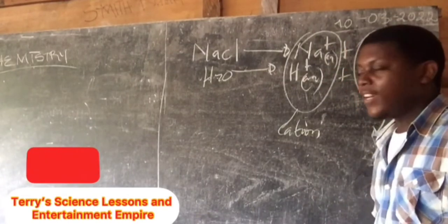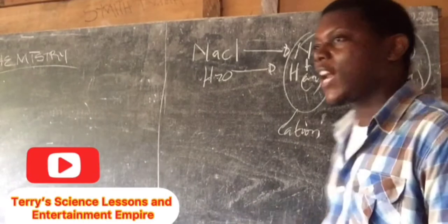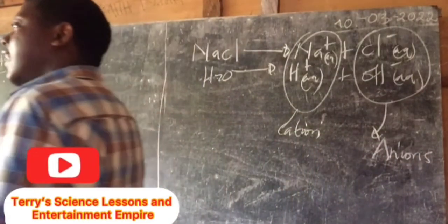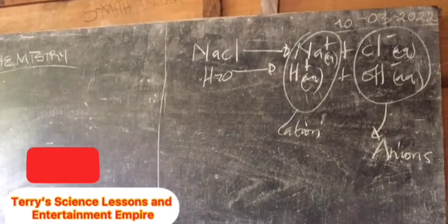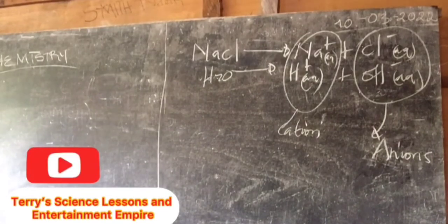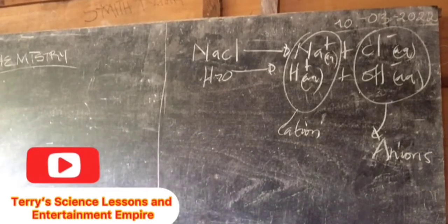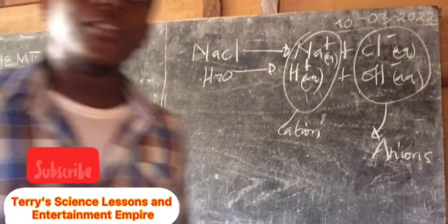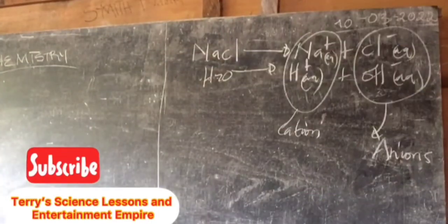Where are the cations? They will now move to the electrode. Cations will migrate to the cathode, which is the negative electrode, while the anions will migrate to the anode, which is the positive electrode.